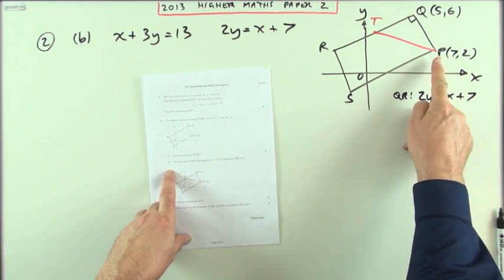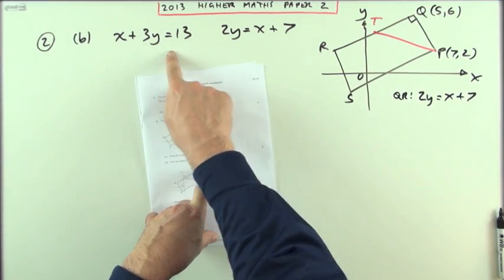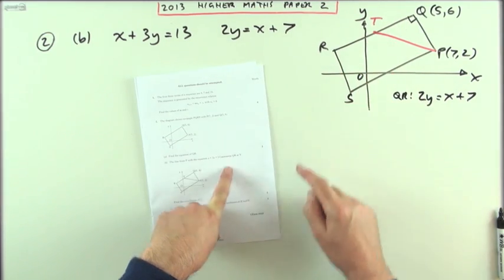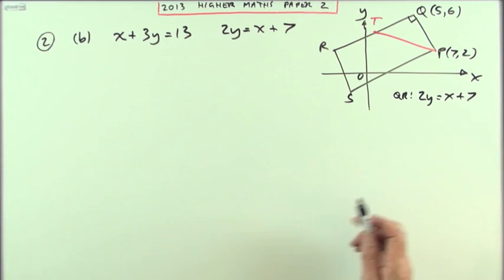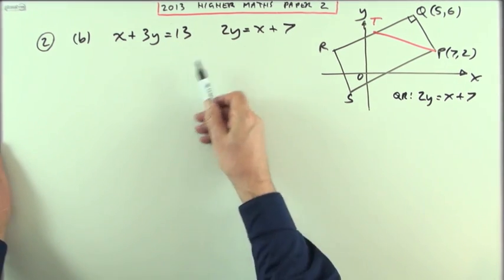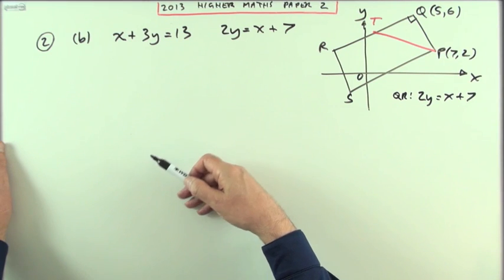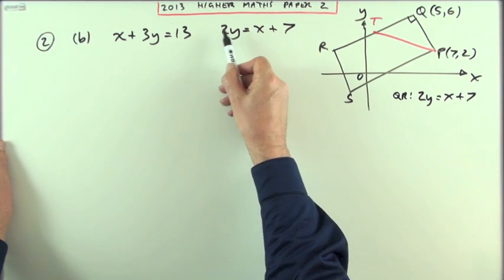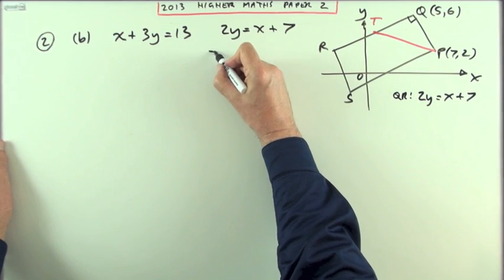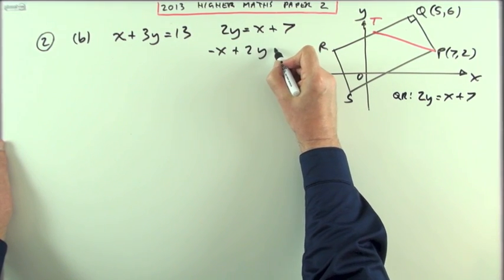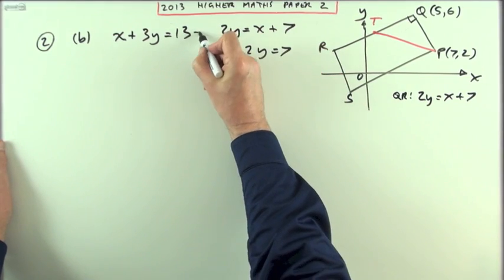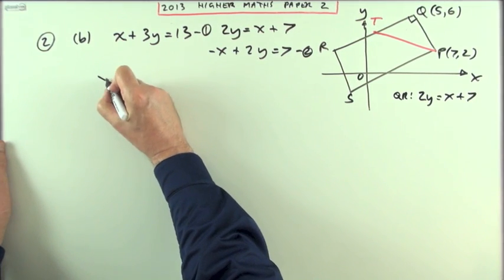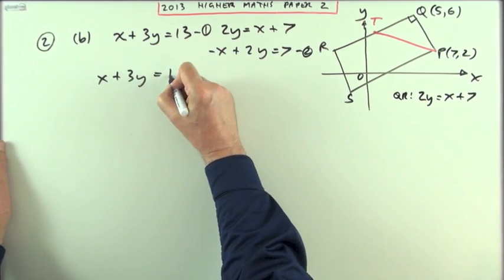Part b then. The line from P with this equation x plus 3y equals 13 intersects the line you just found, QR, at T. Find the coordinates of T. So it's an intersection, so it's a simultaneous equation. You can either do it by elimination or substitution. Maybe since I've got it in this form, I'll just pop that x over and rewrite this as negative x plus 2y equals 7, and then they're both in the same form. Call that one, call that two.